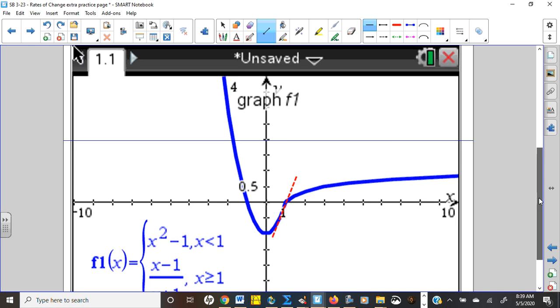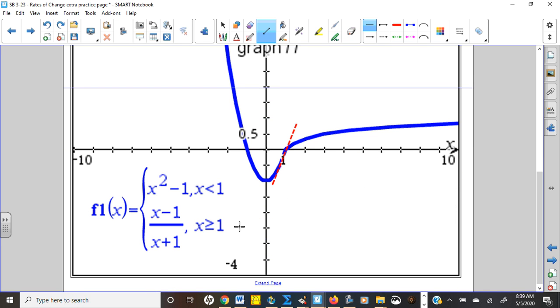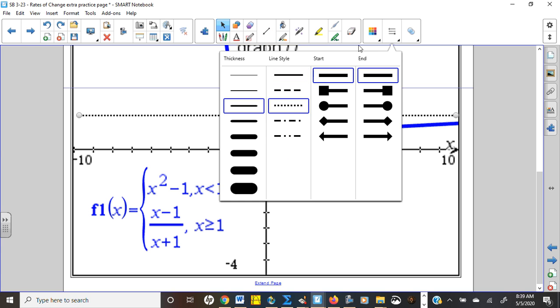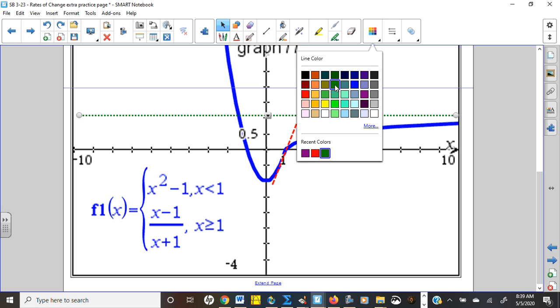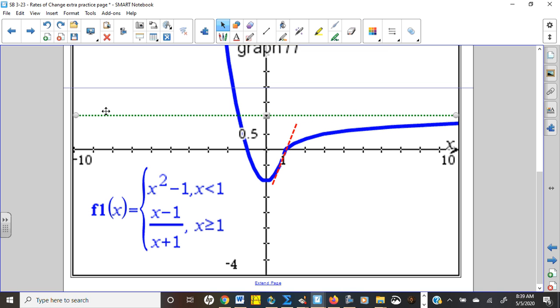By the way, the rational function, if you remember, end behavior is power over power. Well, 1 over 1, x over x is just 1 over 1. It's going to have a horizontal asymptote at 1. Here's 1 right here. So we know that this thing's going to be flattening out into a horizontal asymptote overall for this graph. But what we're interested in is what's happening right here at the slope at 1.